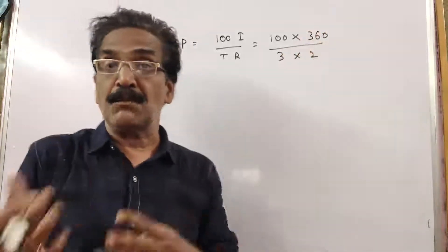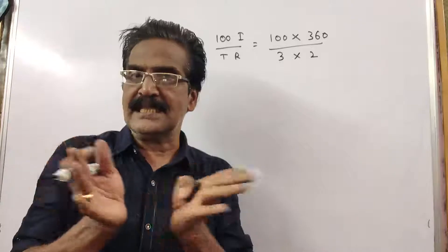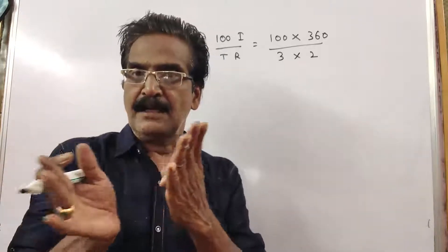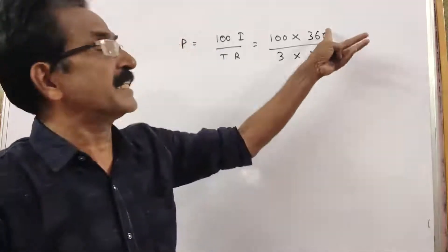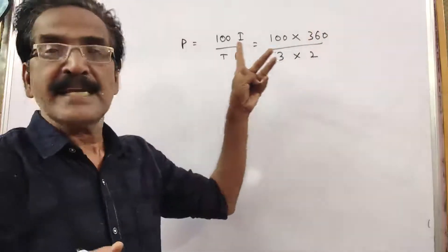If the rate of interest is 2% higher, you are getting 360 rupees more. So 2% rate of interest makes interest of rupees 360 in 3 years.